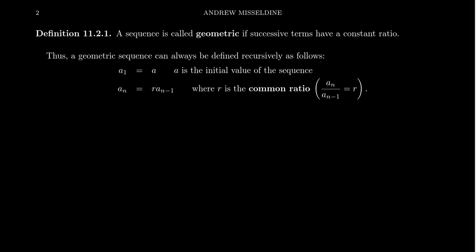We say that a sequence is called geometric if successive terms have a constant ratio. This is actually a recursive definition of what we refer to as a geometric sequence.